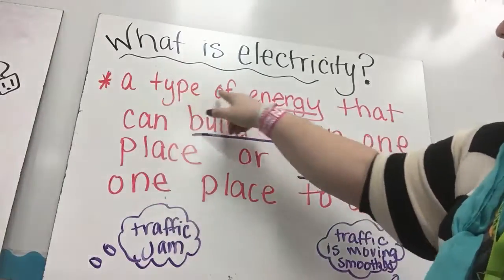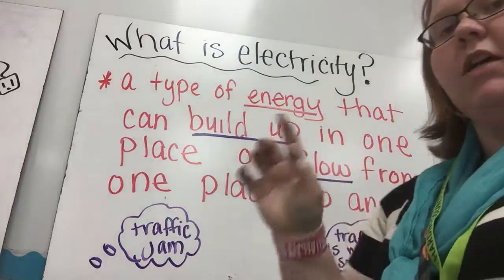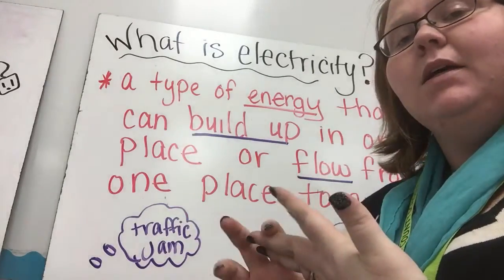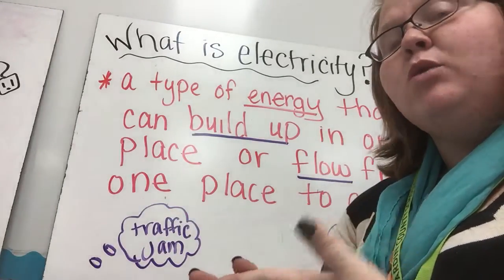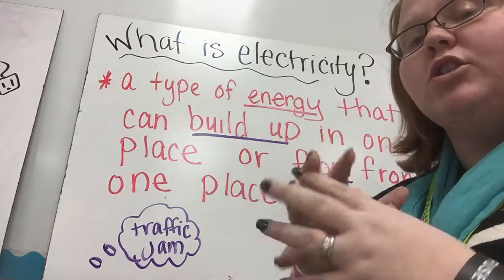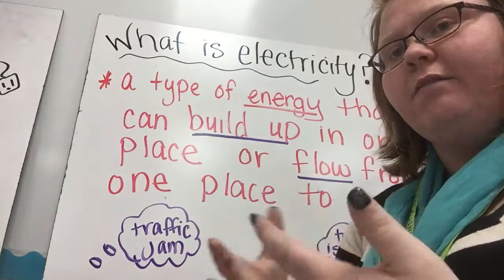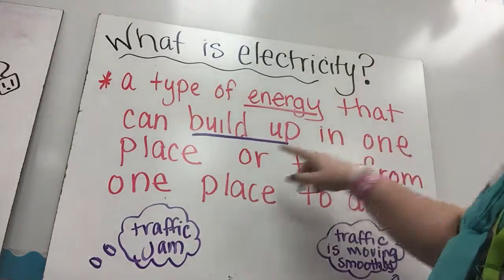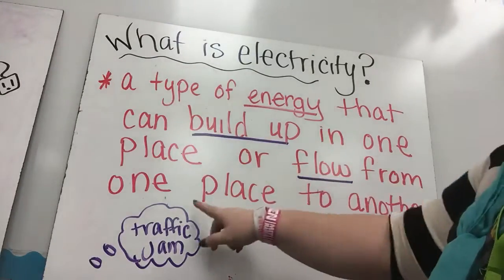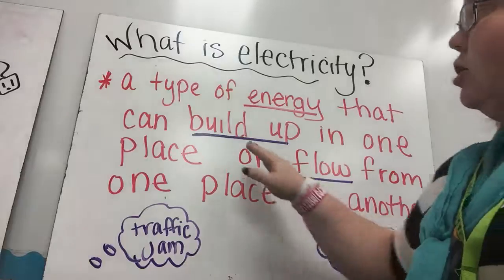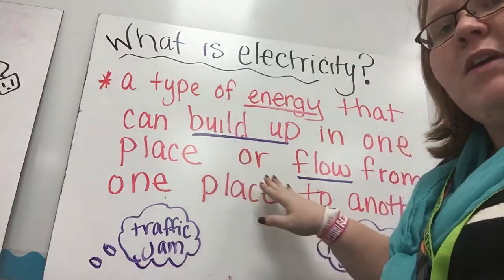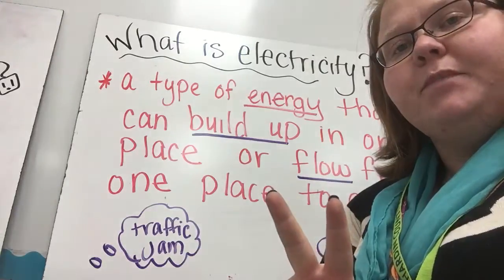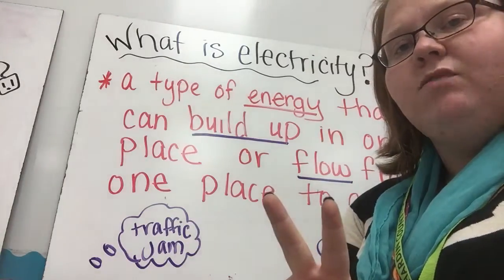Electricity is a type of energy — and we've studied energy being light, sound, and heat. There's an energy of motion, and so we're looking at the electrical side of energy that can build up in one place or flow from one place to another. I've underlined the words 'build up' and 'flow' because that gives us our two types of electricity we're going to be looking at in this video.